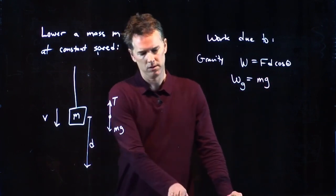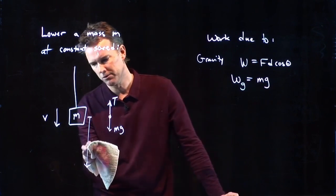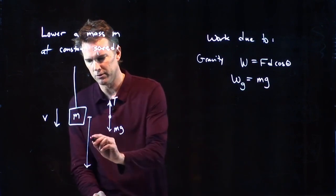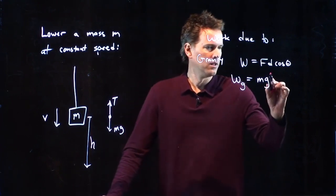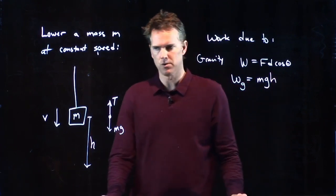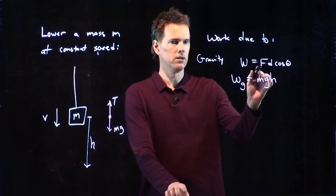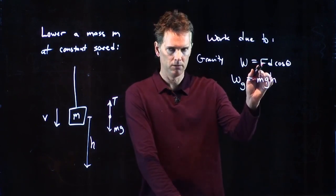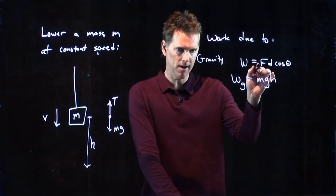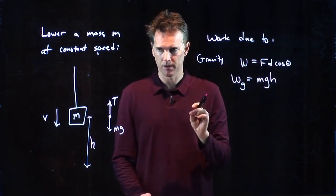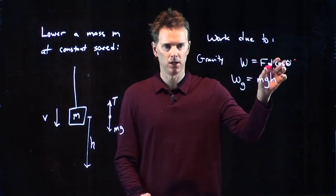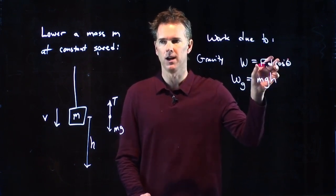The distance that we go, let's call this h because we're used to doing vertical distances, is h. So we put an h right there. These are magnitudes. So when you're putting in f and d, those are always positive numbers. The direction is taken into account with the cosine theta.